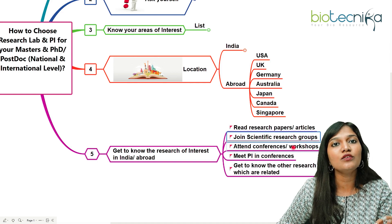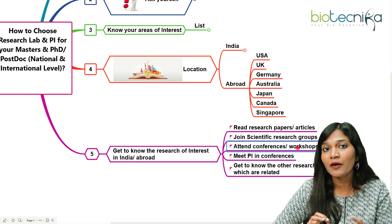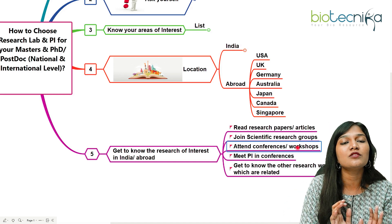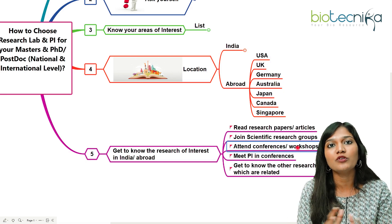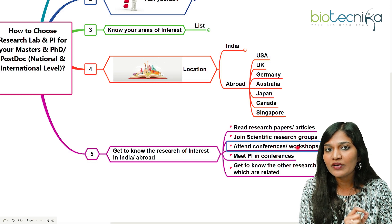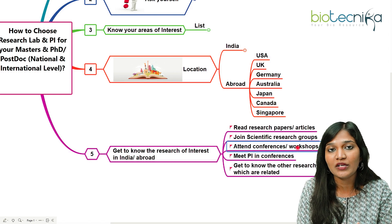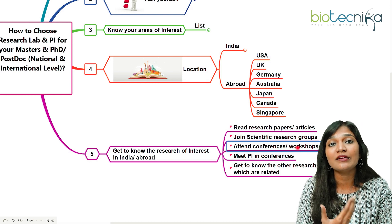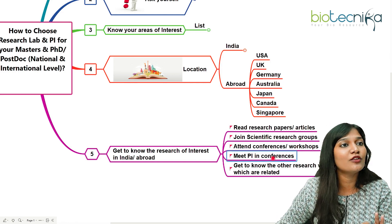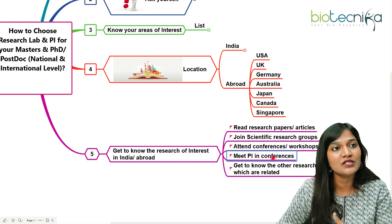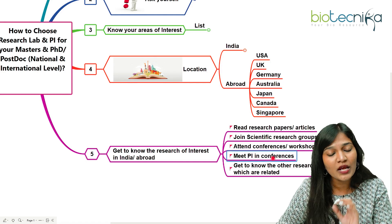Another very effective method is to attend conferences and workshops. Many master's students don't attend these, but if you're interested in research, conferences and workshops are great for networking. People come to present their papers and posters, so if you're interested in breast cancer, you can find scientists working in that area — possibly from reputed labs or from abroad — and directly talk to them, get their email IDs, and build connections. You can also meet principal investigators at conferences, both national and international.